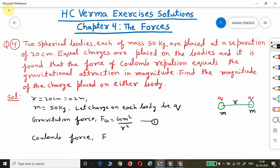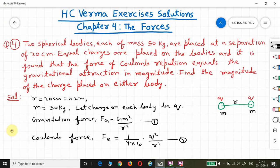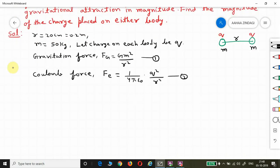Coulomb force, if we denote it as Fe, is Fe equals one by four pi epsilon naught times q² divided by r². When these two forces are equal, we equate them.